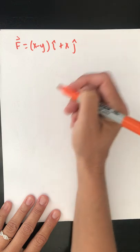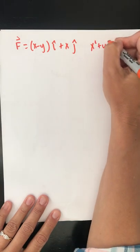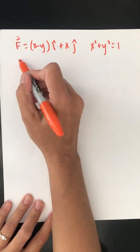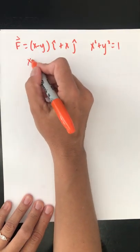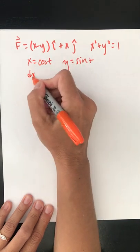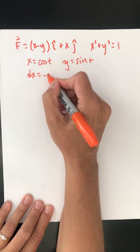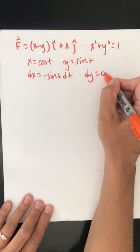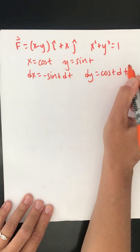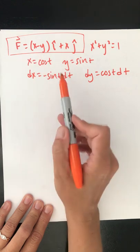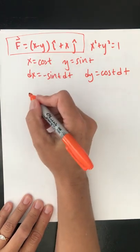My circle was the unit circle. So if x is cosine t, y is sine t, dx is negative sine t dt, dy is cosine t dt.